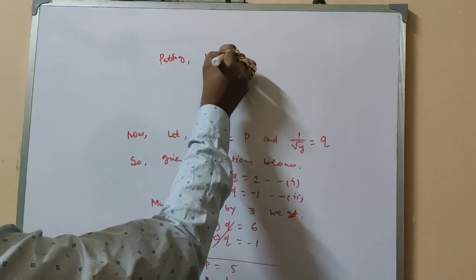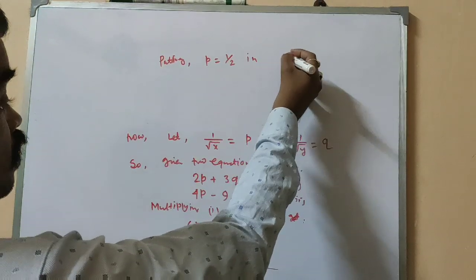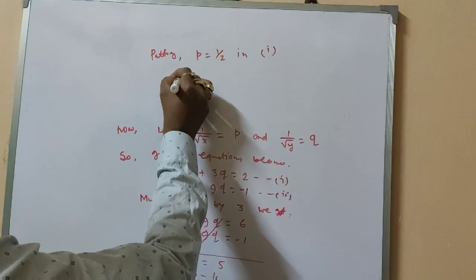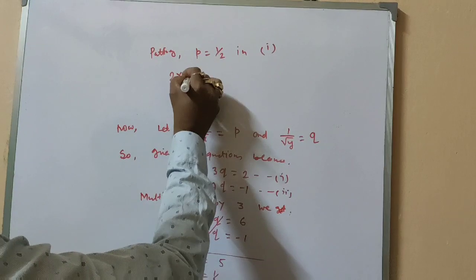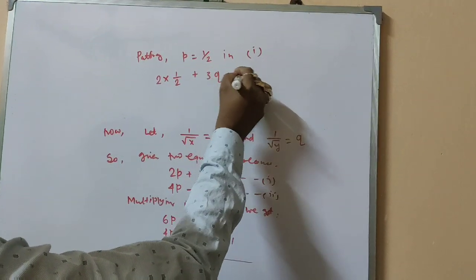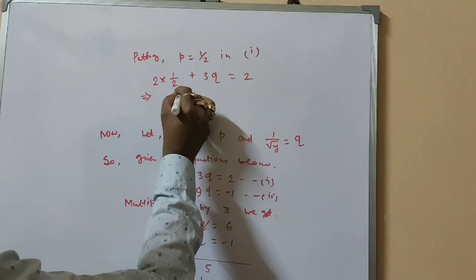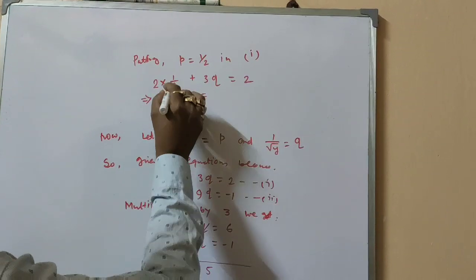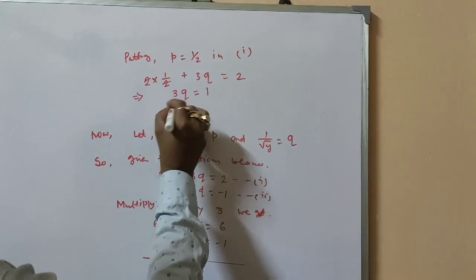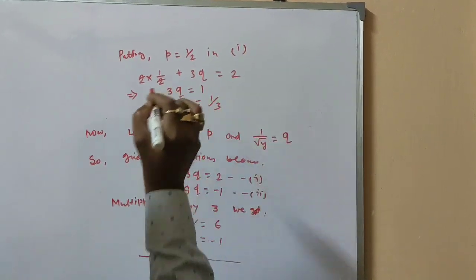Putting p equal to 1 by 2 in equation 1: 2 times 1 by 2 plus 3q equal to 2, so 3q equal to 1, therefore q equal to 1 by 3.